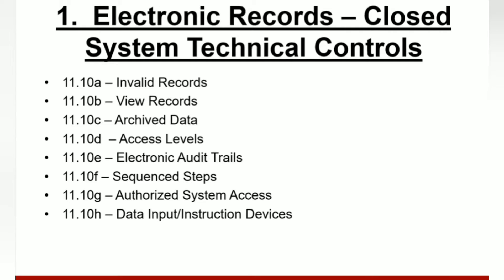For 11.10B, it must be possible to view the entire contents of the records. Also for 11.10B, it must be possible to print the entire contents of the records. Again for 11.10B, it must be possible to generate all records electronically in a format that can be put on a portable medium such as a diskette or CD, or transferred electronically.